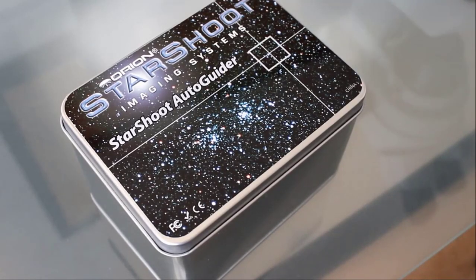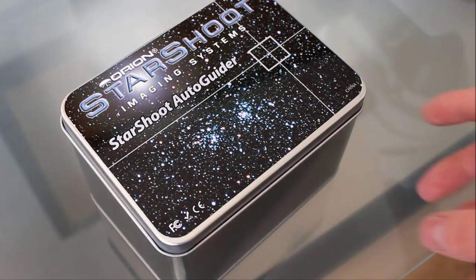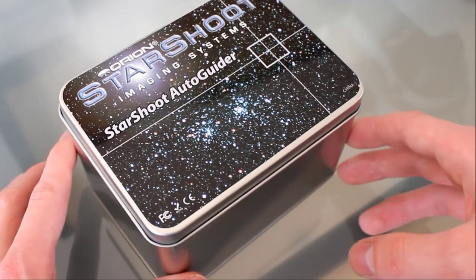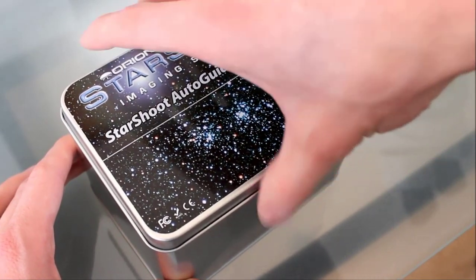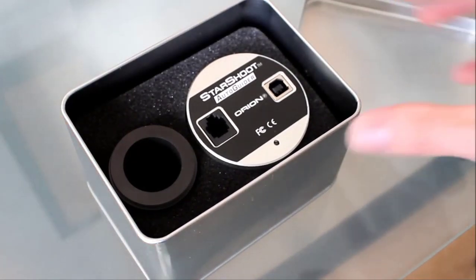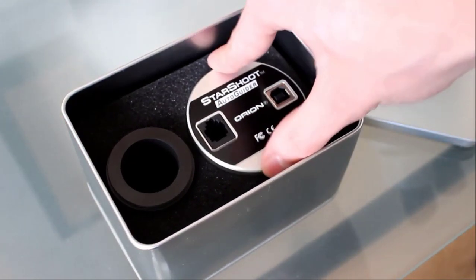If you're interested in packaging, this is what the Starshoot comes in, or at least it did when I purchased it. It's a nice little aluminum or tin box with a nice little picture of the double cluster on the front here, but it just comes in a nice foam padding with all the cords underneath it.